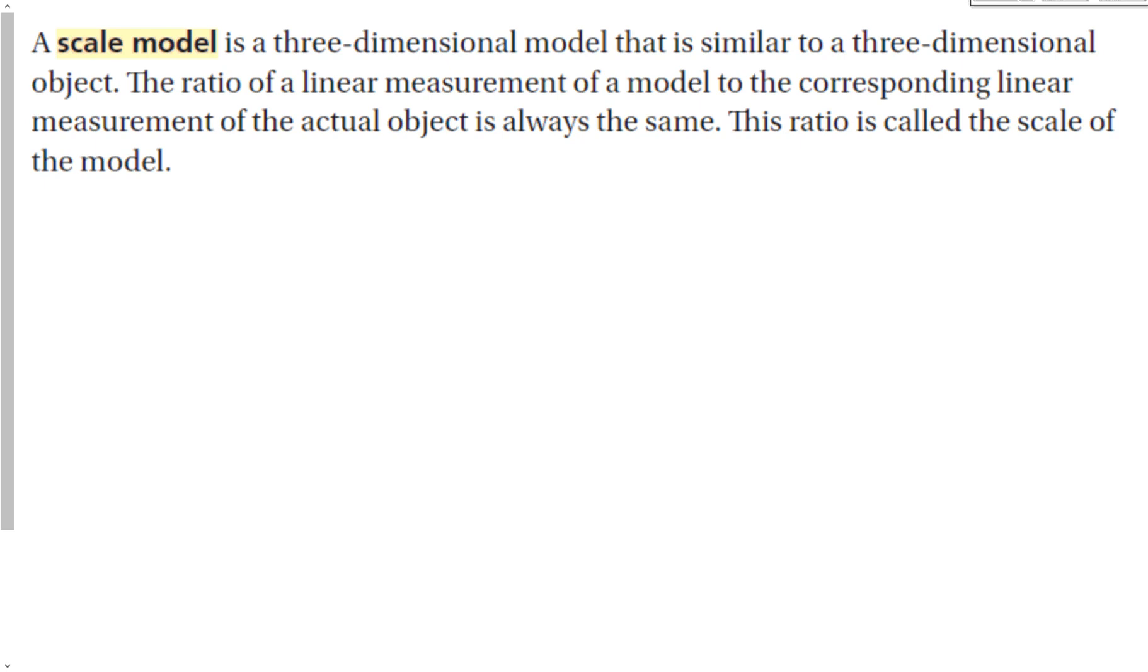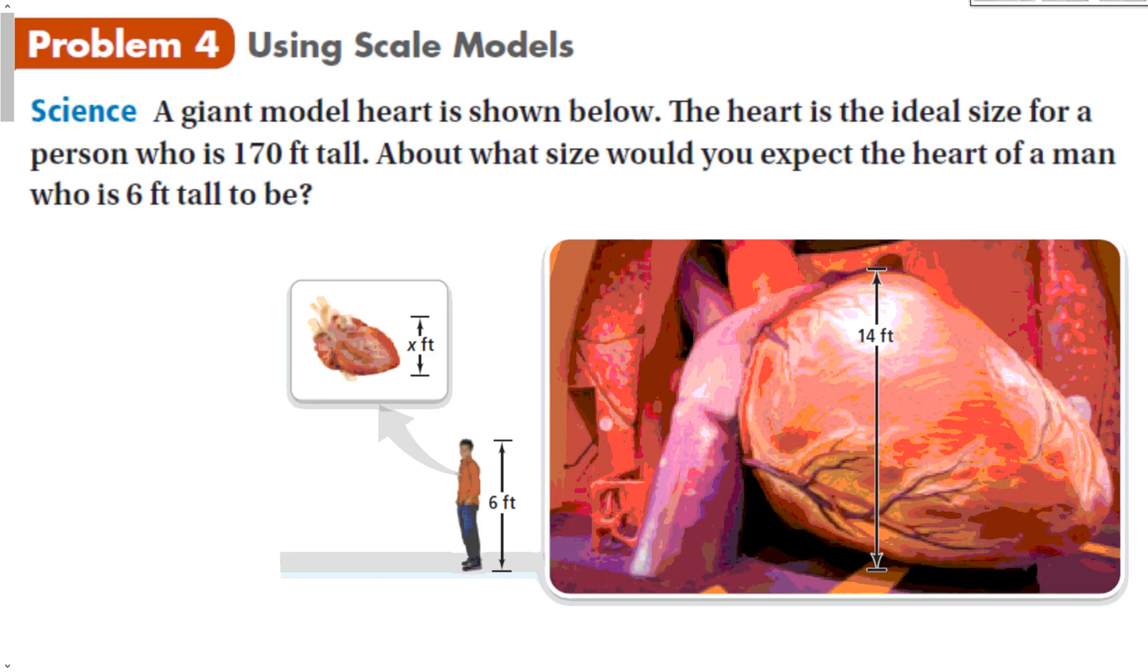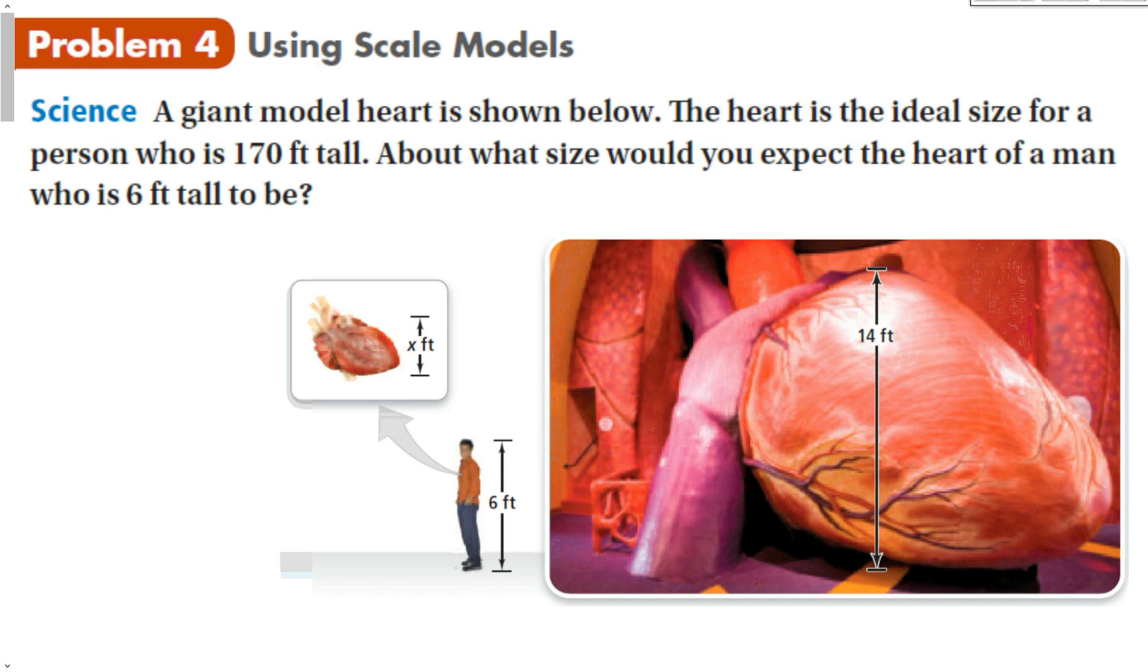Besides a scale drawing, we can also have a scale model. This is a three-dimensional model that is similar to a three-dimensional object. The ratio of the linear measurement of the model to the corresponding linear measurement of the actual object is always the same. This ratio is still called the scale. Now we have the model of a heart in a museum, something like Liberty Science Center. A giant model heart is shown below. The heart is the ideal size for a person who is 170 feet tall. About what size would you expect the heart of a man who is 6 feet tall to be?